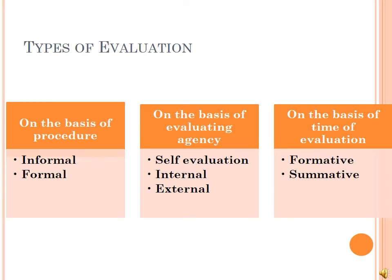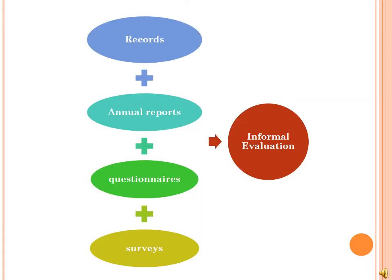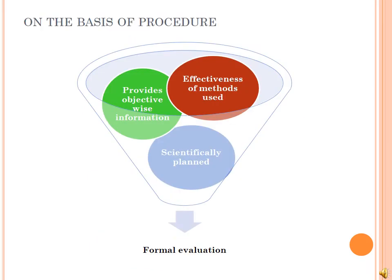Informal evaluation is usually done by studying data obtained from primary or secondary sources. It may involve review and analysis of information obtained from records, annual reports, questionnaires, and surveys. Formal evaluation, on the other hand, is more scientifically planned and is carried out to provide objective-wise information on the basis of effectiveness of methods used. Simply stated, formal evaluation finds out scientifically the extent to which we have attained our objectives.